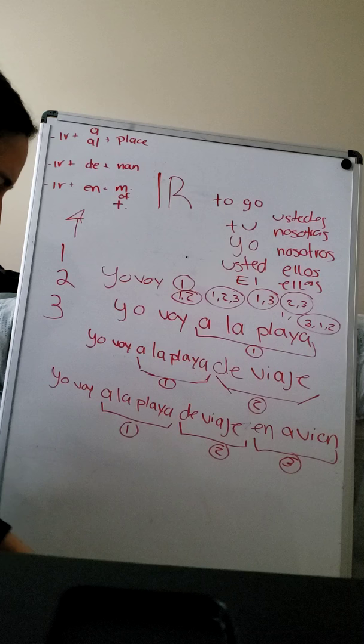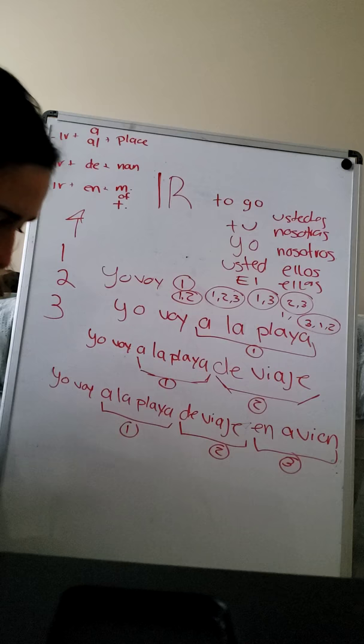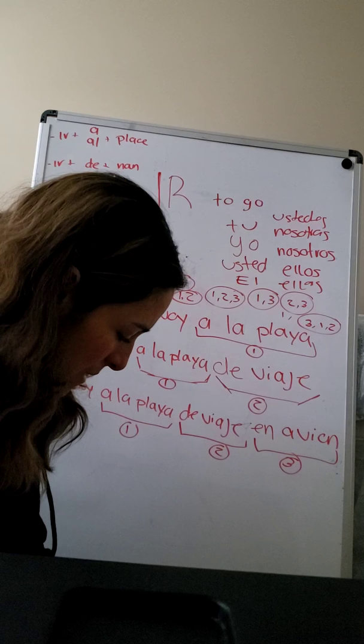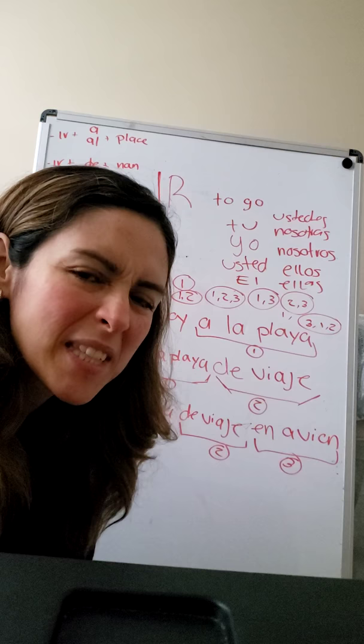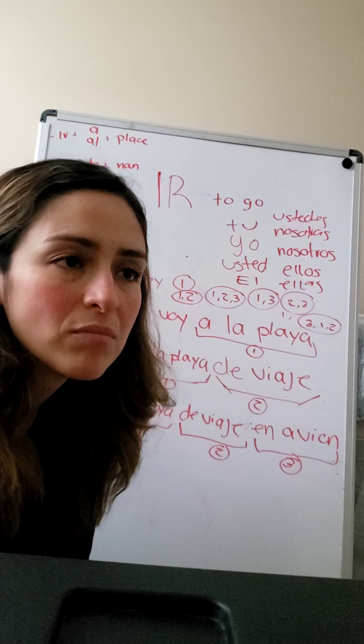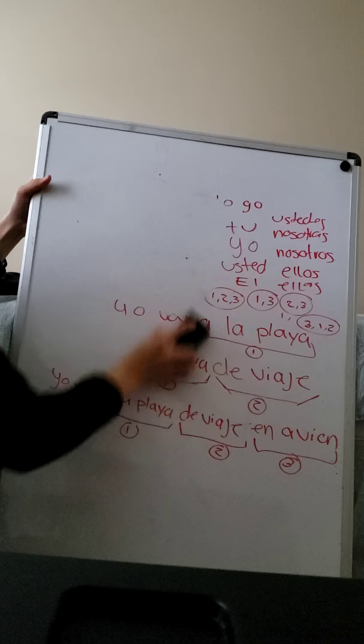You have these formulas and you can use them however you want. Remember, 'ir' is 'to go.' That's it for that section. Now let's look briefly at the present and past tense. I hope you've been watching these videos.